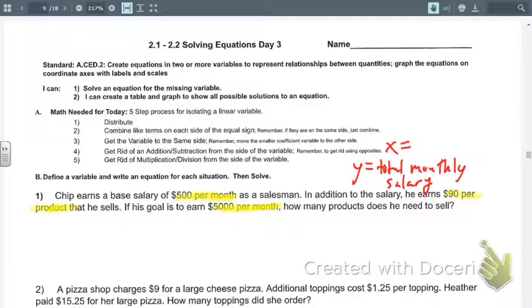And then X is going to be the number of products sold. His monthly salary depends on the number of products he sells.